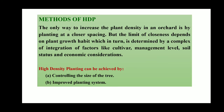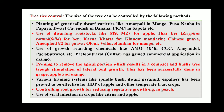Which are the methods of HDP? The only way to increase plant density in an orchard is by planting at closer spacing, but the limit of closeness depends on the plant growth habit, which in turn is determined by the complex integration of factors like cultivars, management level, soil status, and economic considerations. HDP can be achieved by: (1) controlling the size of the tree, and (2) improved planting system.